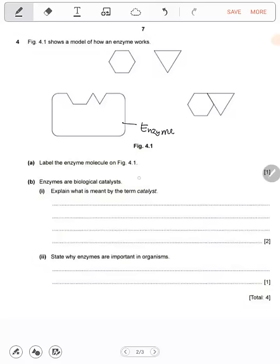Enzymes are biological catalysts. Explain what is meant by the term catalyst. A catalyst is a biological substance that speeds up or increases the rate of a chemical reaction.